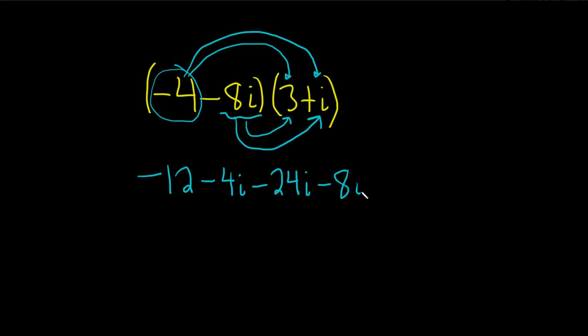That's negative 8i, and that is squared. Now we can combine these i's. You can kind of just treat them like a variable, like x. So you have negative 12 minus 4i minus 24i is minus 28i.